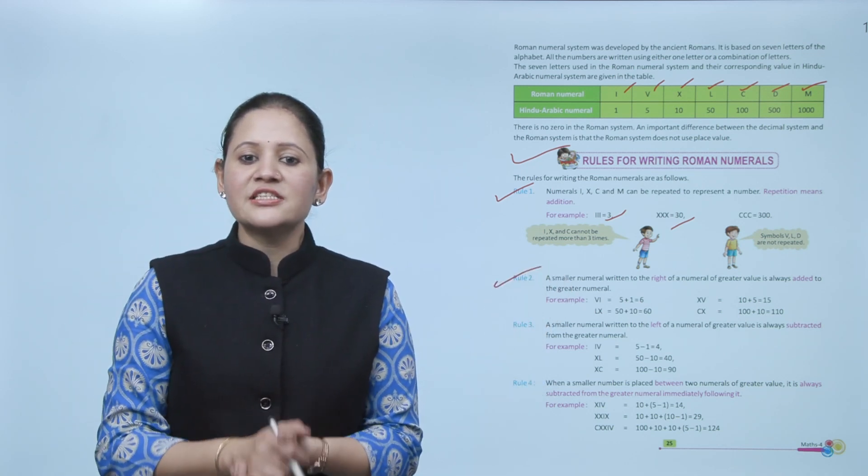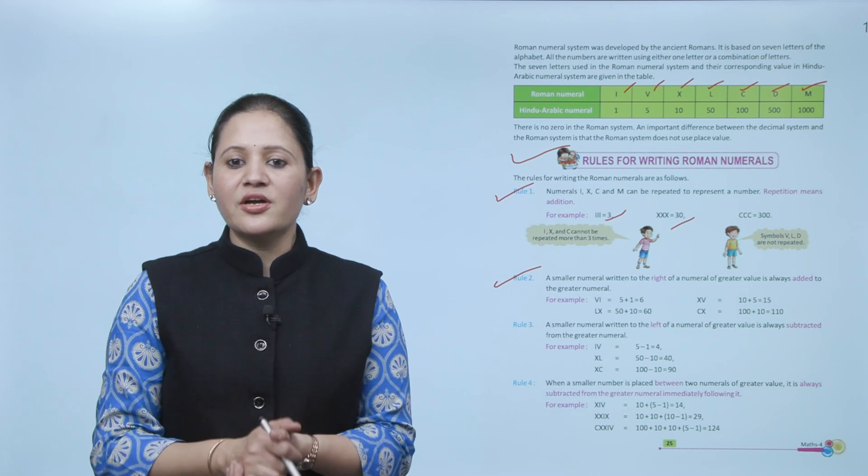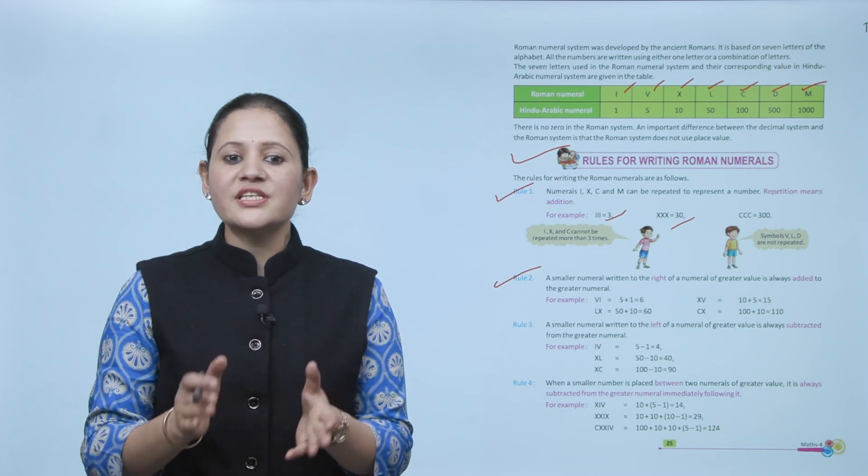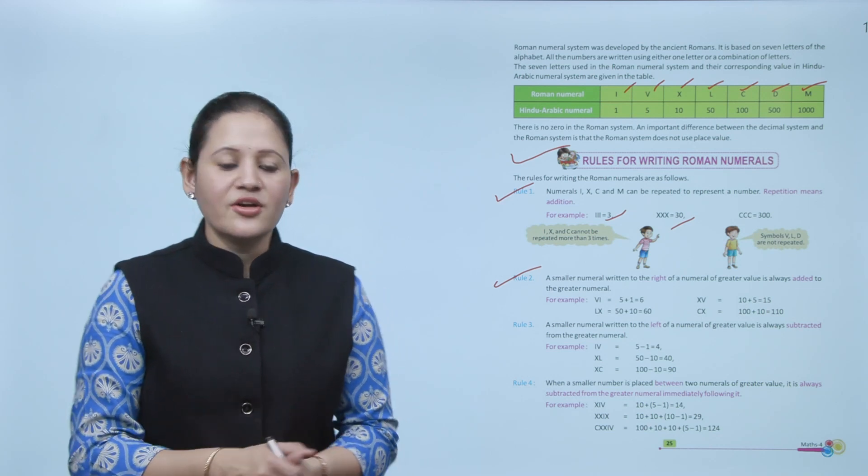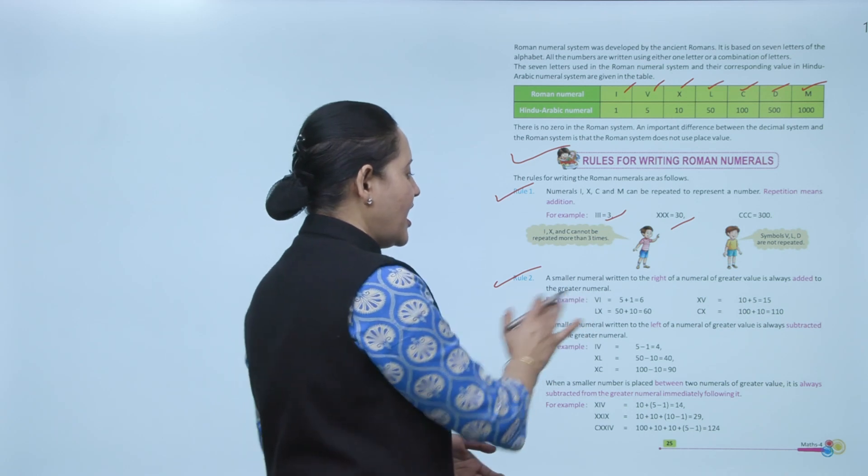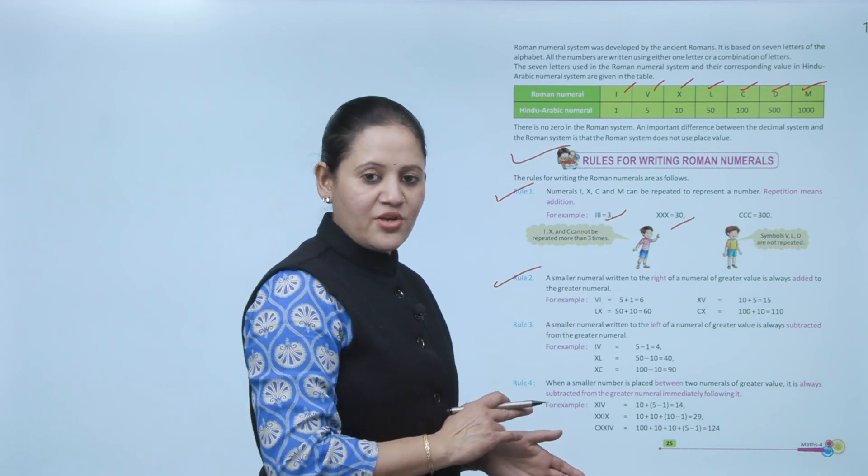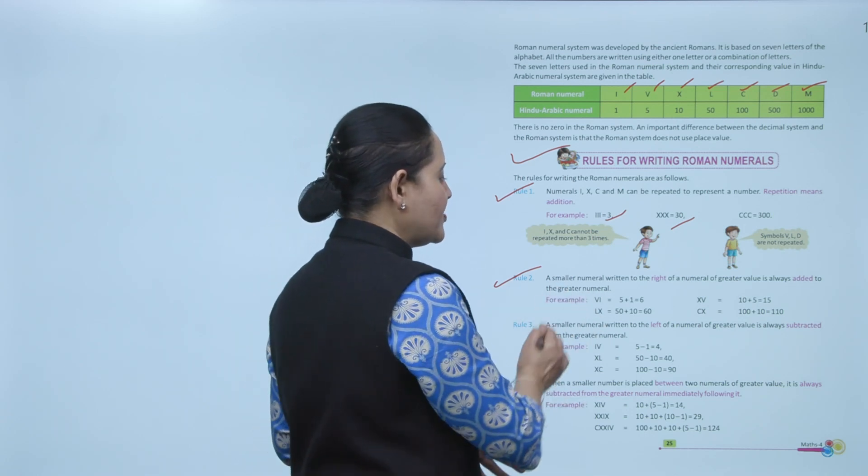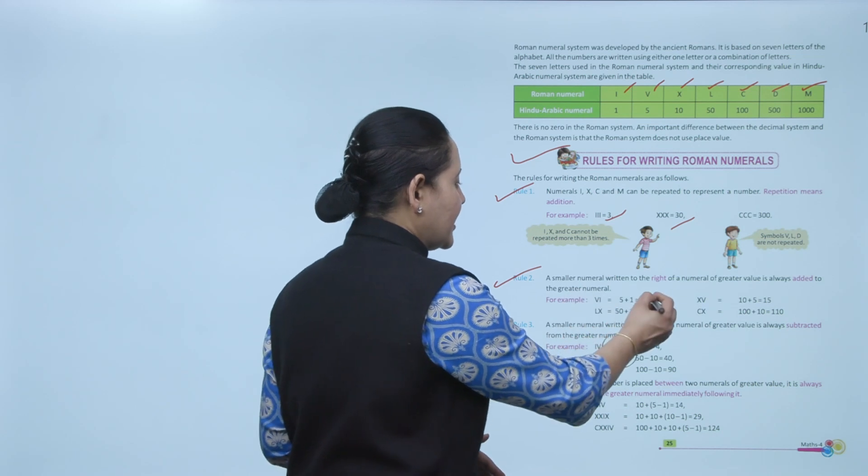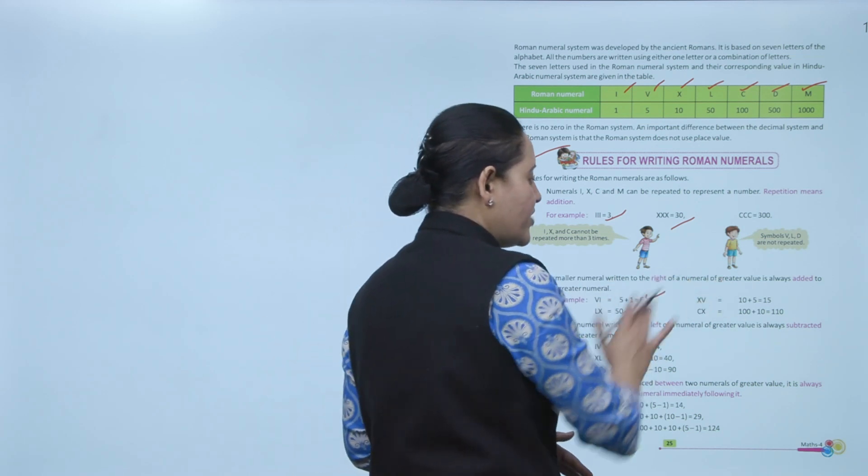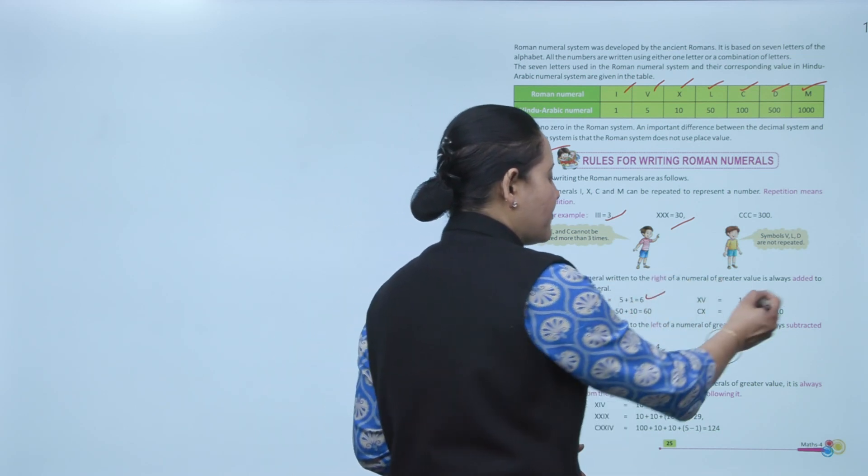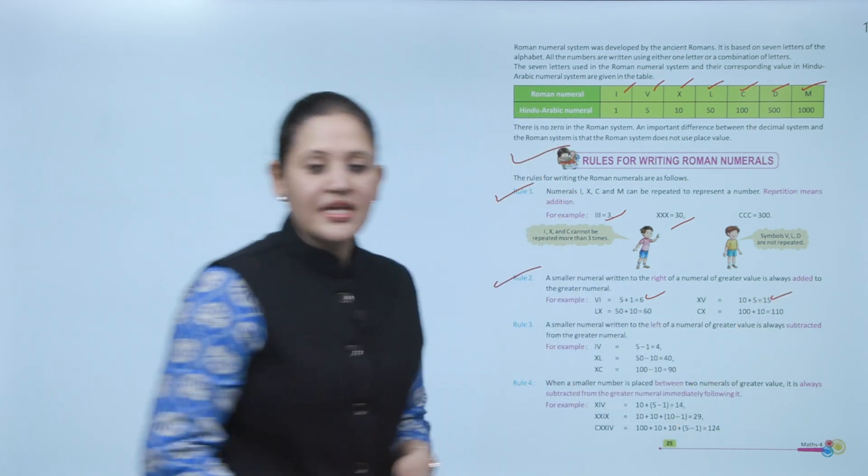Rule number two: The smaller numeral written to the right of the numeral of greater value is always added to the greater numeral. For example, VI, so V ki value hoti 5, I ki 1, greater number ki right side hai, means value add hogi, so 5 + 1 that is 6. XV, so 10 + 5, that is 15.